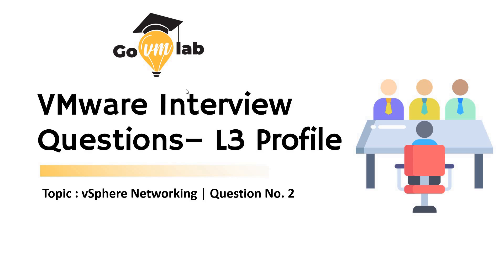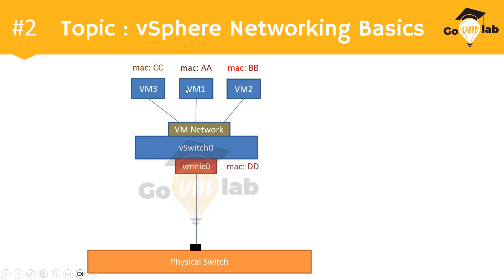Let's check out question number two and understand the scenario given. It looks to be a very simplified or basic level of vSphere networking scenario, but let me simplify it for you before we try to understand the question. This particular scenario says that you have three virtual machines: VM1, VM2, and VM3.